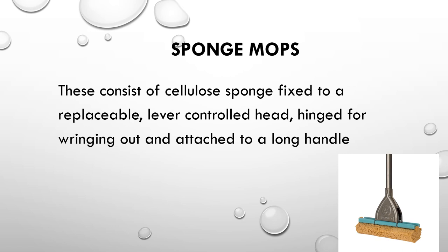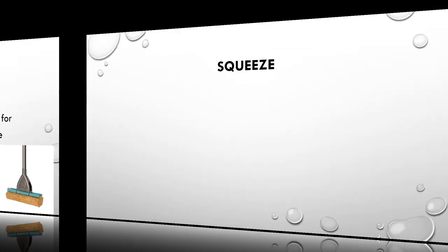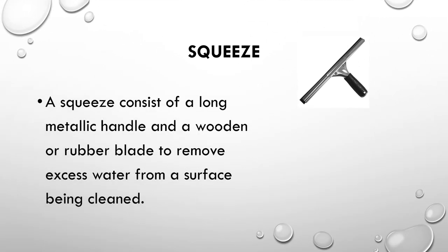Sponge mops consist of a cellulose sponge fixed to a replaceable lever-controlled head, hinged for wringing out and attached to a long handle. Using a sponge mop is one of the easiest ways to wash a hard floor. Short handle sponge mops are also available for cleaning windows. A squeezy consists of a long metallic handle and a wooden or rubber blade to remove excess water from a surface. A smaller version called a window squeezy is used for wiping water from windows after washing.